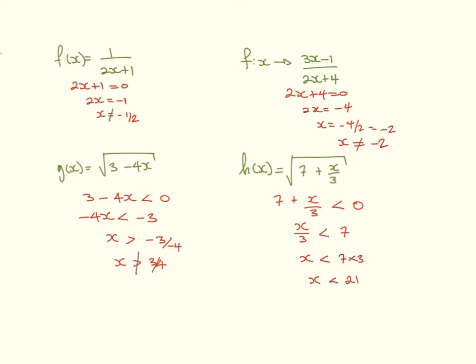If we get any value of x that's less than 21, it will turn this whole thing negative in here. And you can't square root negative numbers. So, then x can't be any number that is less than 21.